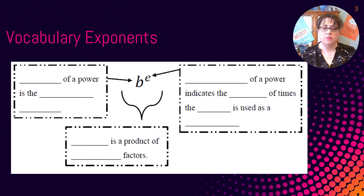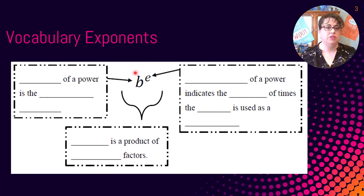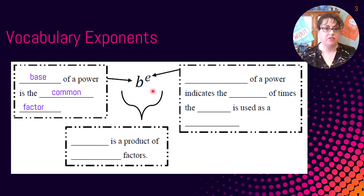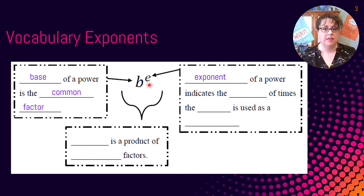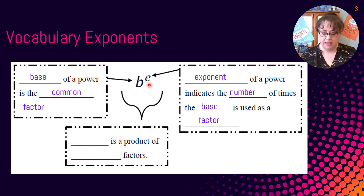Let's begin with some exponent vocabulary. What we have is b to the e power, and we're going to break it down into the different components. b is our base of the power — it's the common factor, the thing we're going to be multiplying out. e is our exponent, and it indicates the number of times the base is used as a factor. Together, this is the power — a product of the repeated factor.